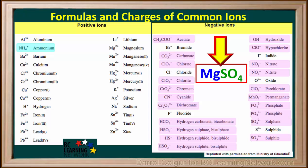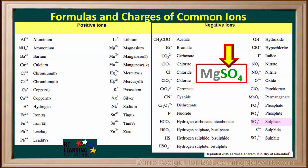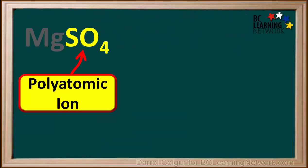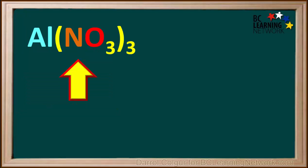The formula we're working with is MgSO4. SO4 in the formula is from the polyatomic ion sulfate, SO4²⁻. Mg in the formula is from the single metal Mg²⁺. So MgSO4 contains the polyatomic ion sulfate, SO4.